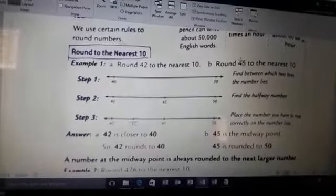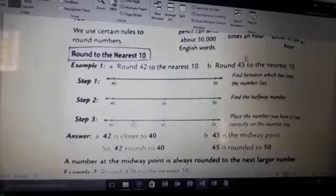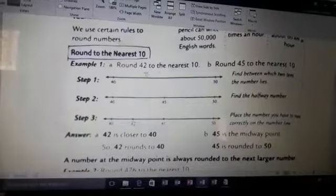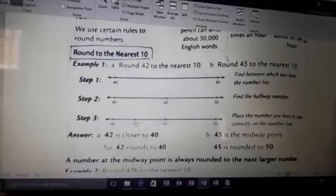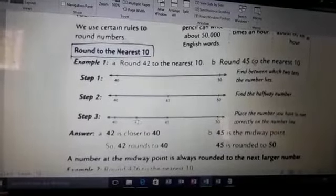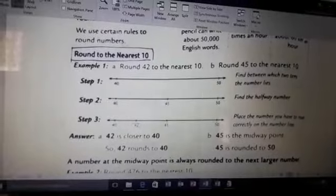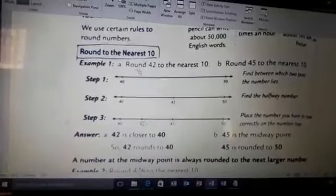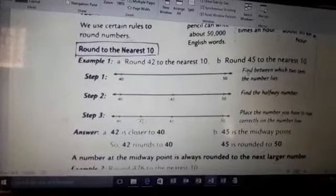So those numbers that are before this midpoint will be rolled down to the left ten, and those numbers which are after 45 will round it towards 50. So as 42 is given, it is before the midpoint 45, it will roll down to 40.